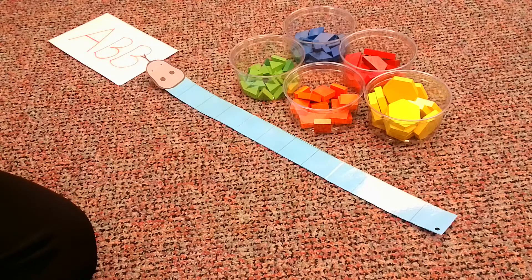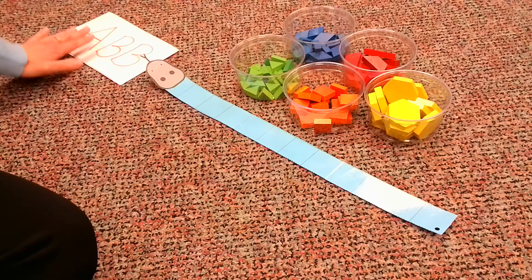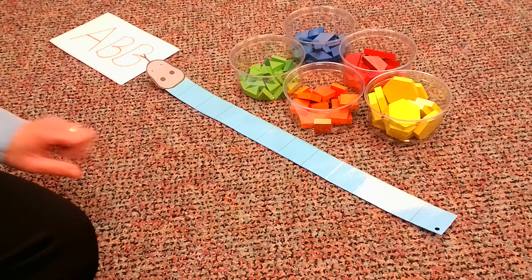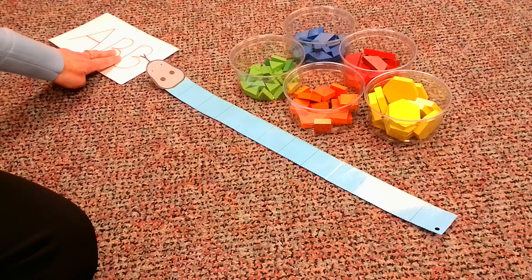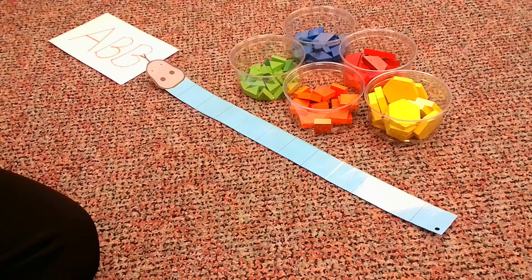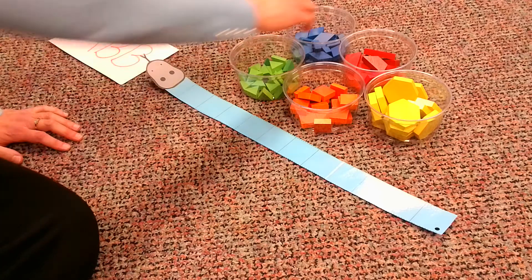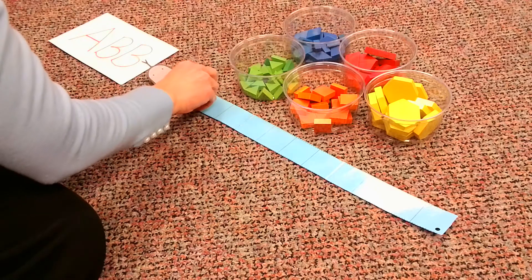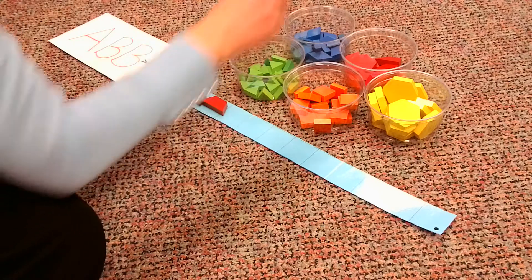So here we go. I still only need two shape types. One for A and then one for B. So let's see what we want to do this time. Maybe I want to do rhombus, trapezoid, trapezoid.